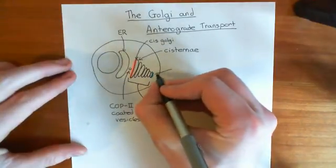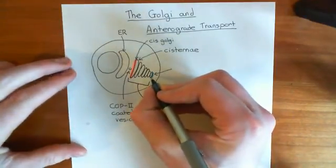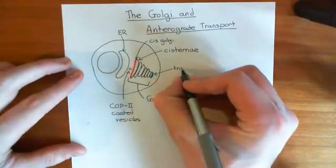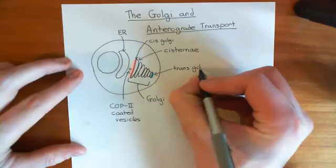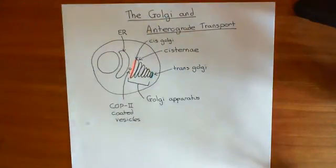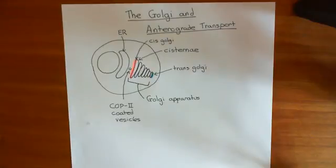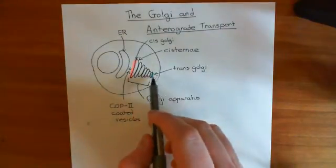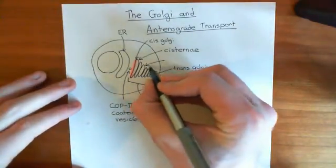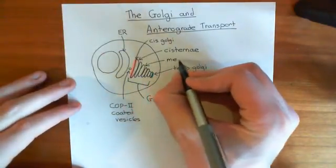The portion of the Golgi that's away from the ER is known as the trans-Golgi. Trans, probably Latin, means 'across' or 'on the other side.' So this is the portion further away from the endoplasmic reticulum. The bit in the middle is known as the medial Golgi, for middle.